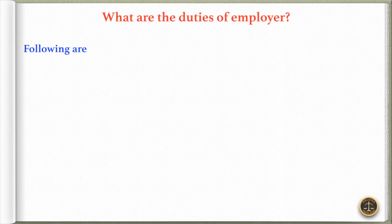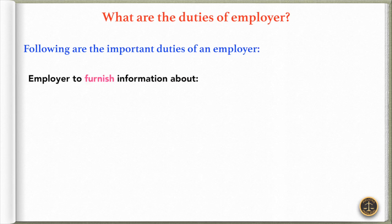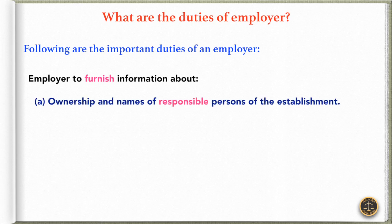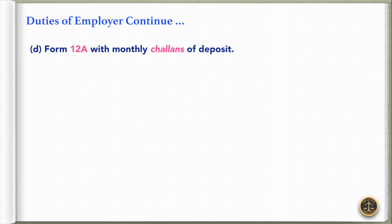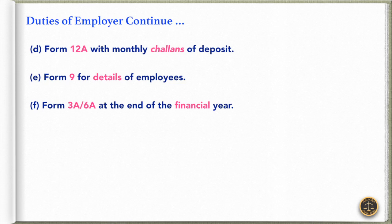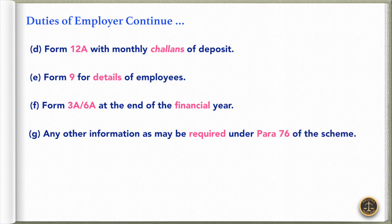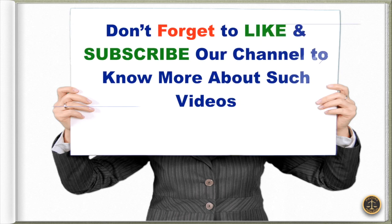Now, the question is: what are the duties of the employer? Following are the important duties of an employer: the employer must furnish information about ownership and names of responsible persons of the establishment, declaration and nomination, joining and leaving of service by the members in Form 5 and Form 10 respectively, Form 12A with monthly challan of deposit, Form 9 for details of employees, Form 3A and 6A at the end of the financial year, and any other information as may be required under Para 76 of the scheme. This is all about the Employees Provident Funds and Miscellaneous Provisions Act 1952.